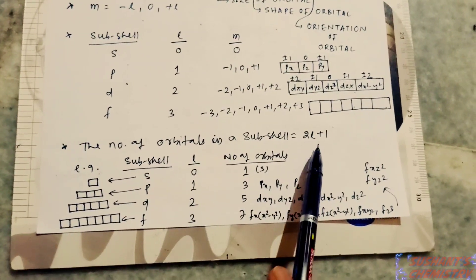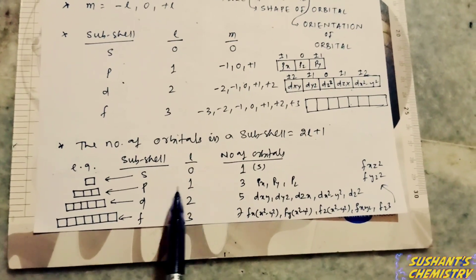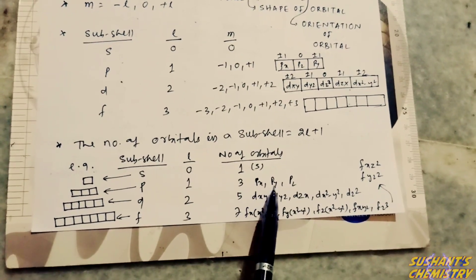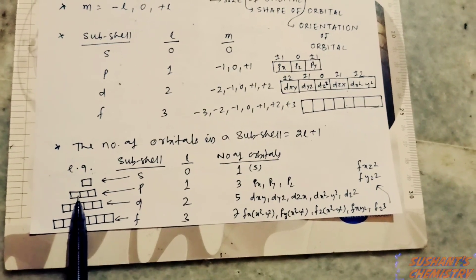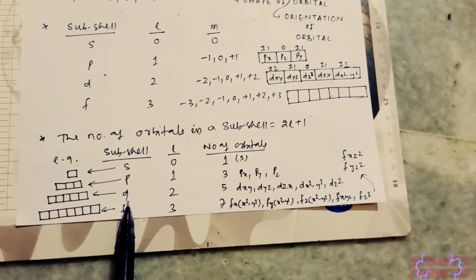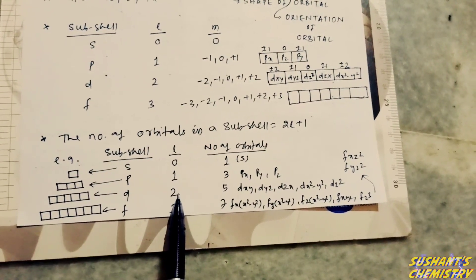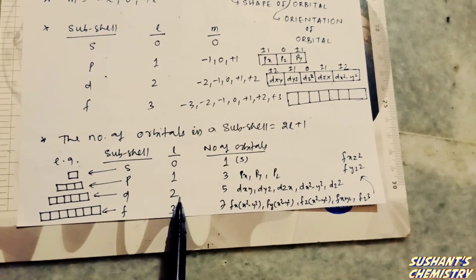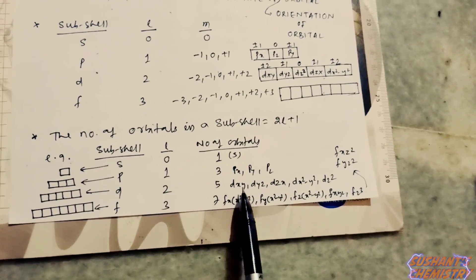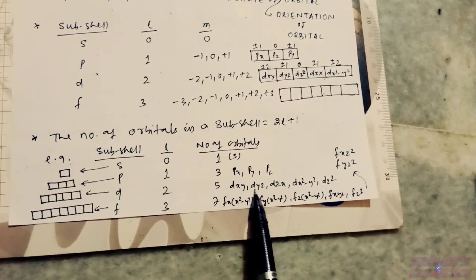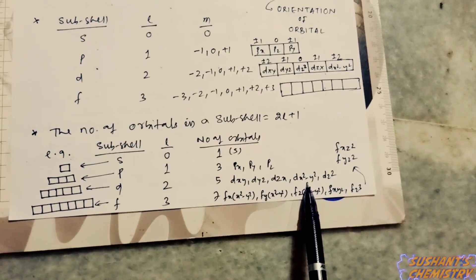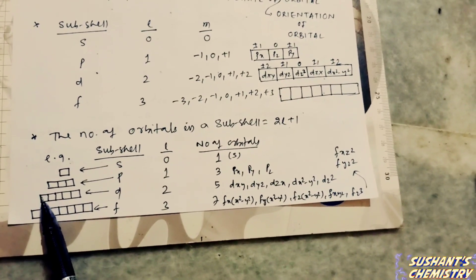For the d subshell, the value of l equals two. Using the formula 2l plus one, we get five orbitals: dxy, dyz, dzx, dx²−y², and dz².